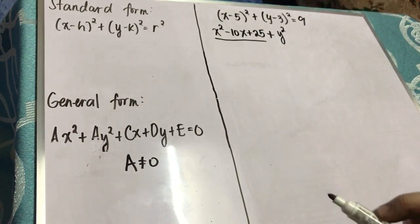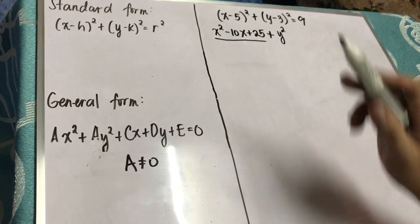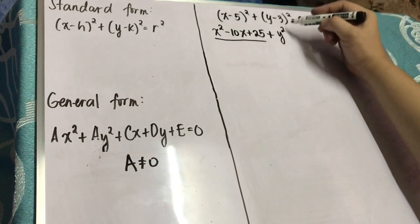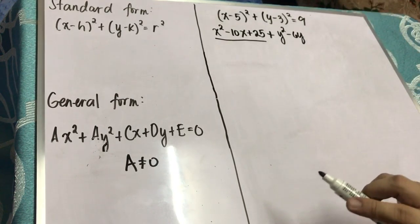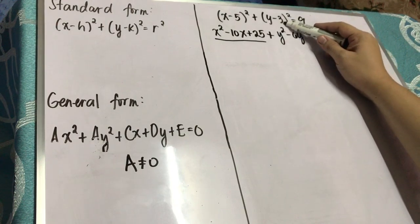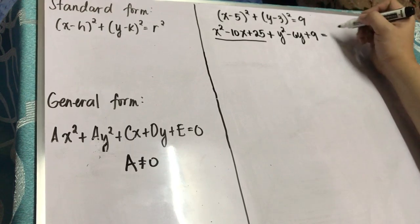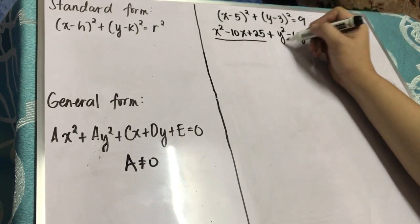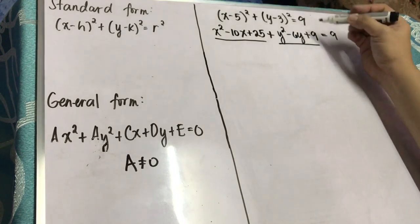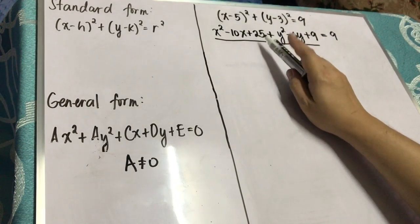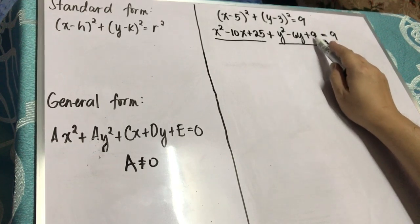Now for the y group, your first term is y, your second term is negative 3. You square the first term, you have y squared. You multiply the first term and the second term by the constant 2: negative 3 times y is negative 3y times 2, you have negative 6y. Then you square the second term: negative 3 times negative 3, that's positive 9. So this serves as the product of the quantity of y minus 3 squared.